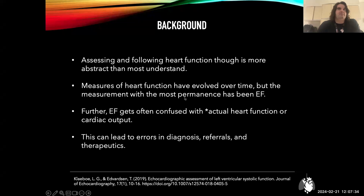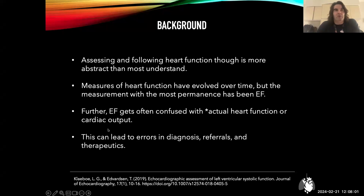EF is largely what gets cited, and learners often ask about it. EF is important in select states but not necessarily as important as other measures in all states. It's certainly the one most often cited and most often confused with actual heart function or cardiac output. This can lead to errors in diagnosis, referrals, and therapeutics — for example in patients with a depressed ejection fraction from chronic cardiomyopathy who are referred for acute heart dysfunction, or even thought to have an acute ischemic event when the heart has been chronically exposed to toxins or has a cardiomyopathy.